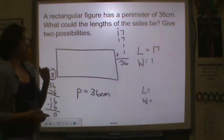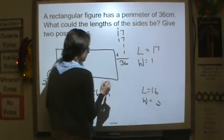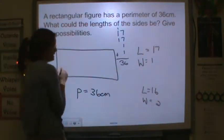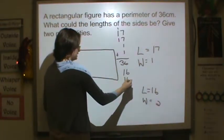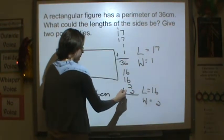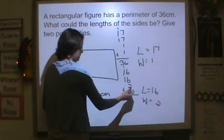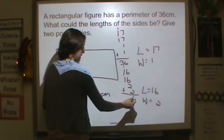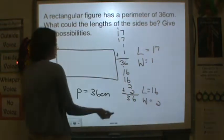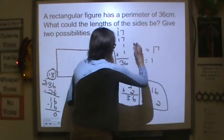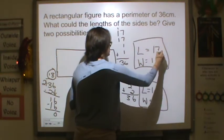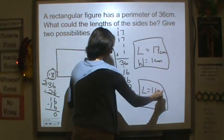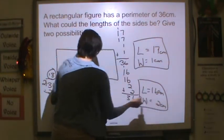All right, another way we could do it is we could do 16 and 2, because those two numbers add up to 18. And if you added them, 16, 16, 2 and 2. 6 and 6 is 12, 2 and 2 is 4, 12 and 4 is 6. So these could be my lengths and my widths. And don't forget, we're going to label these as we go along.